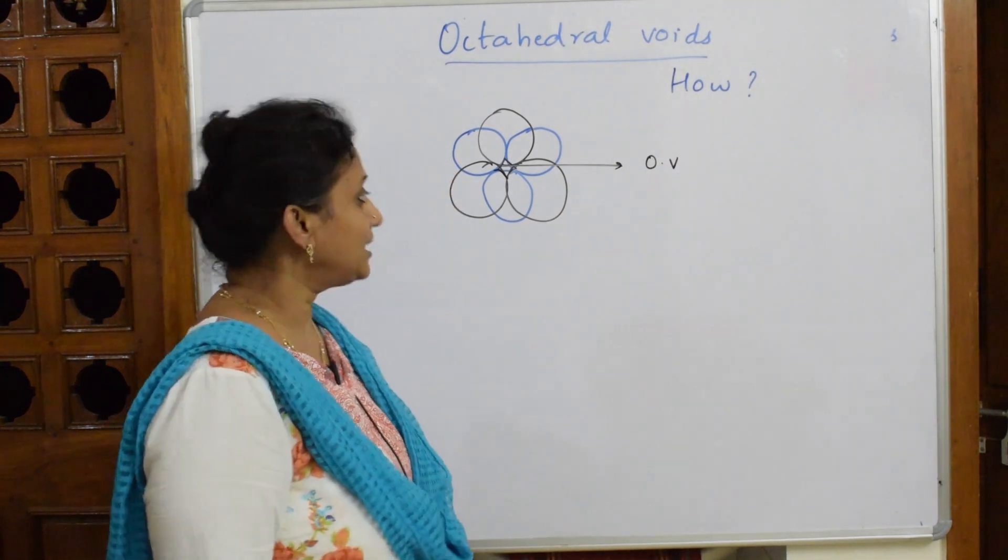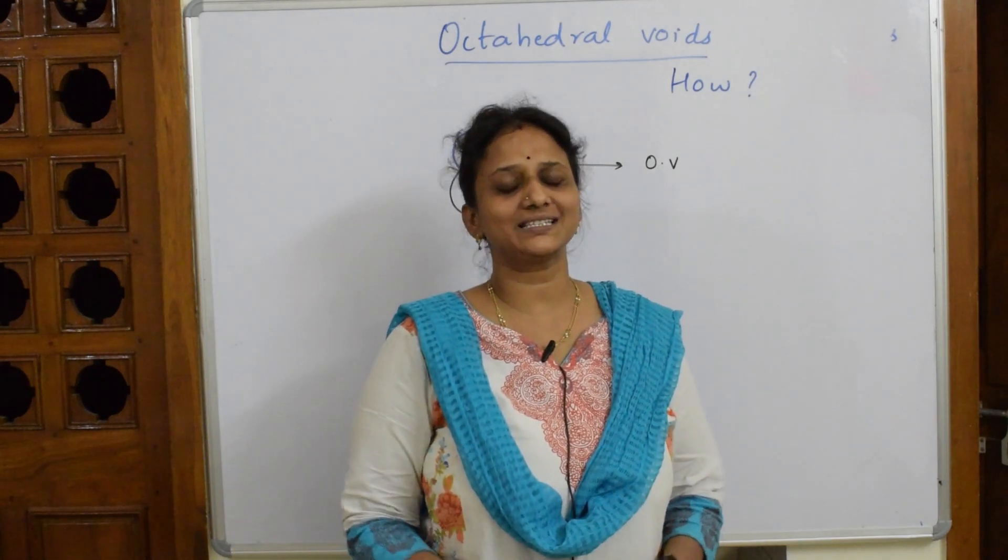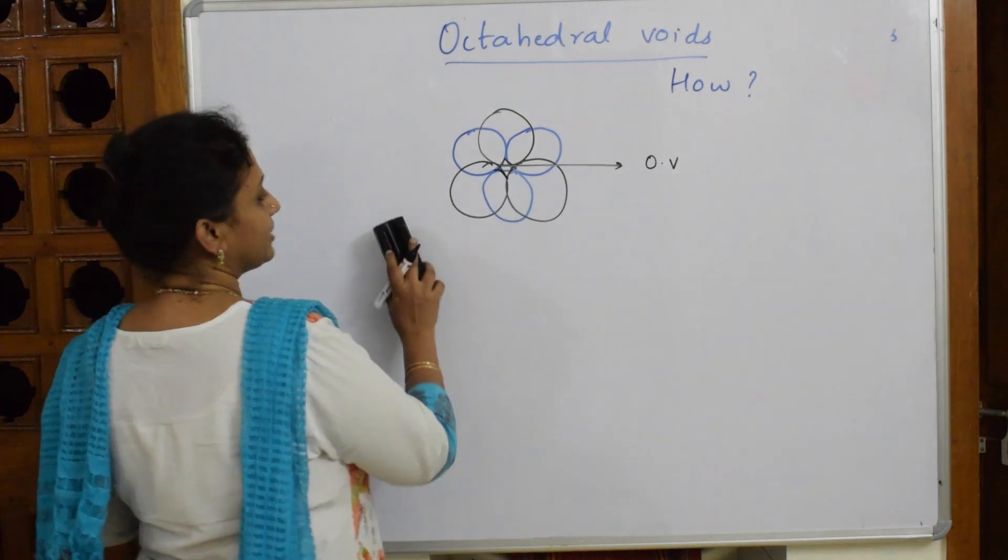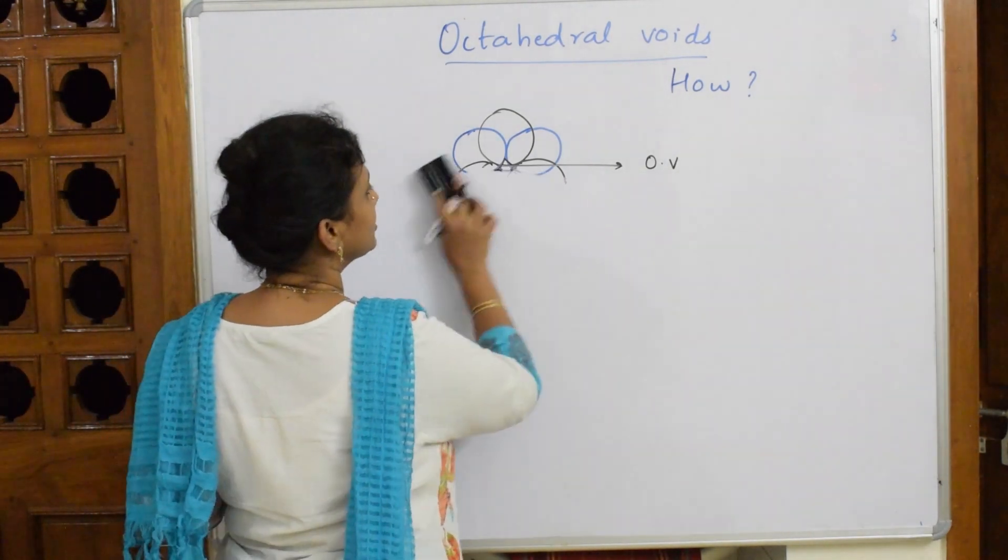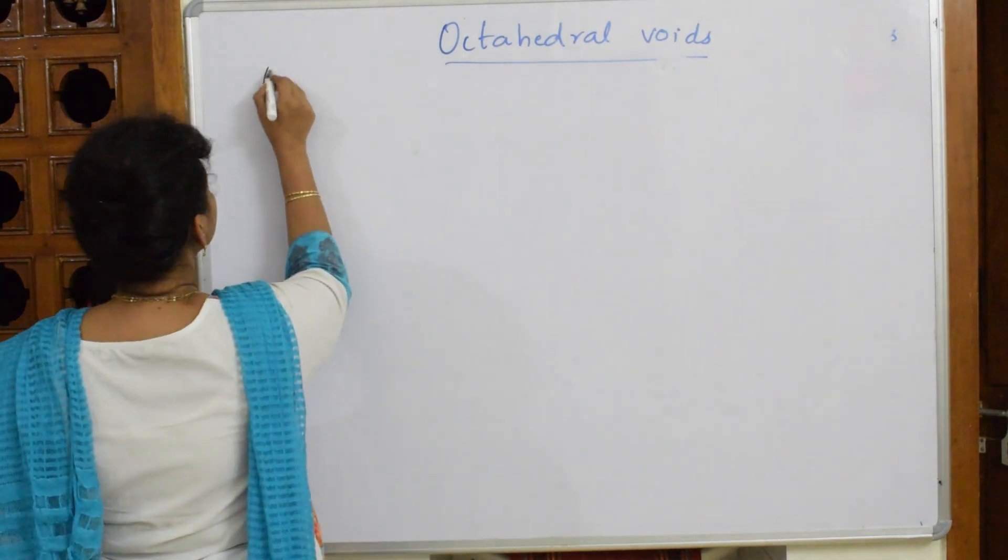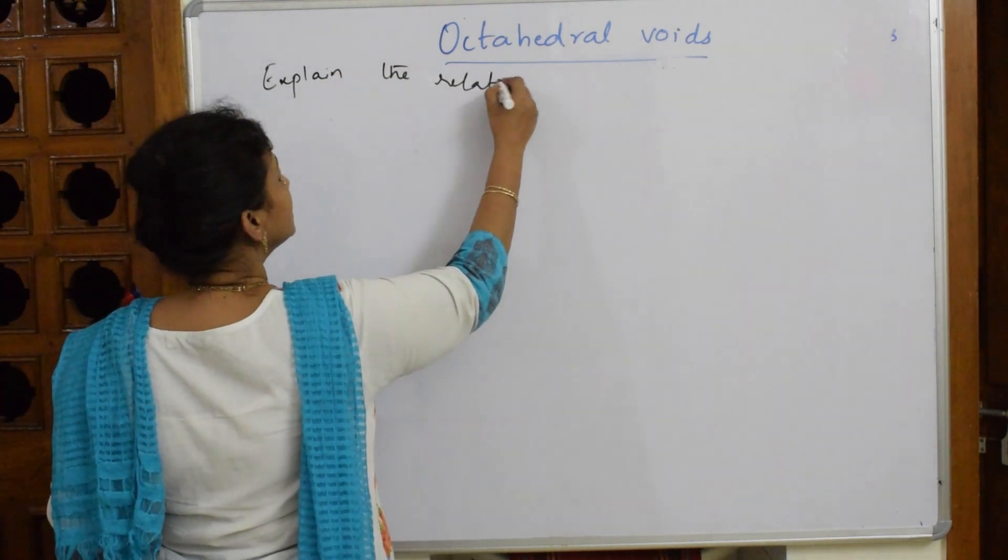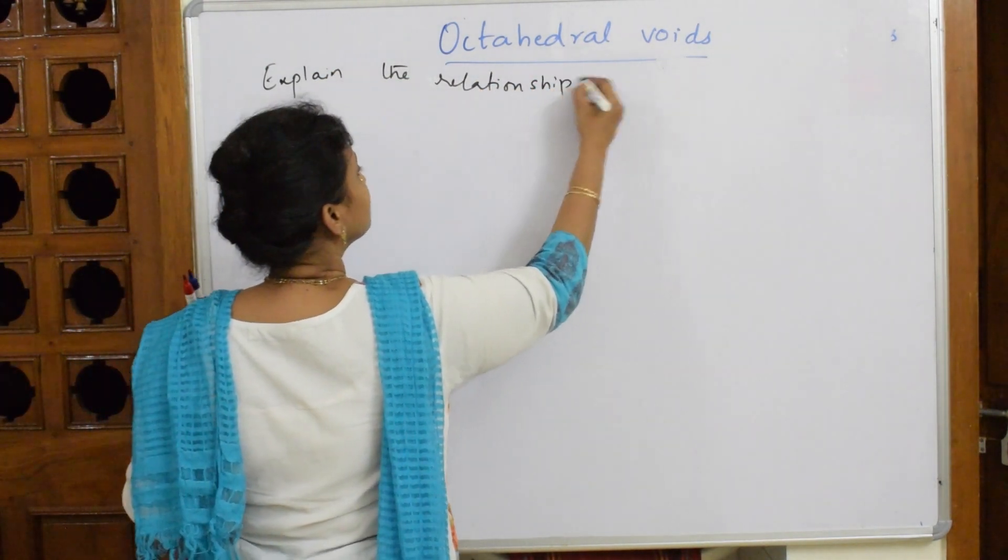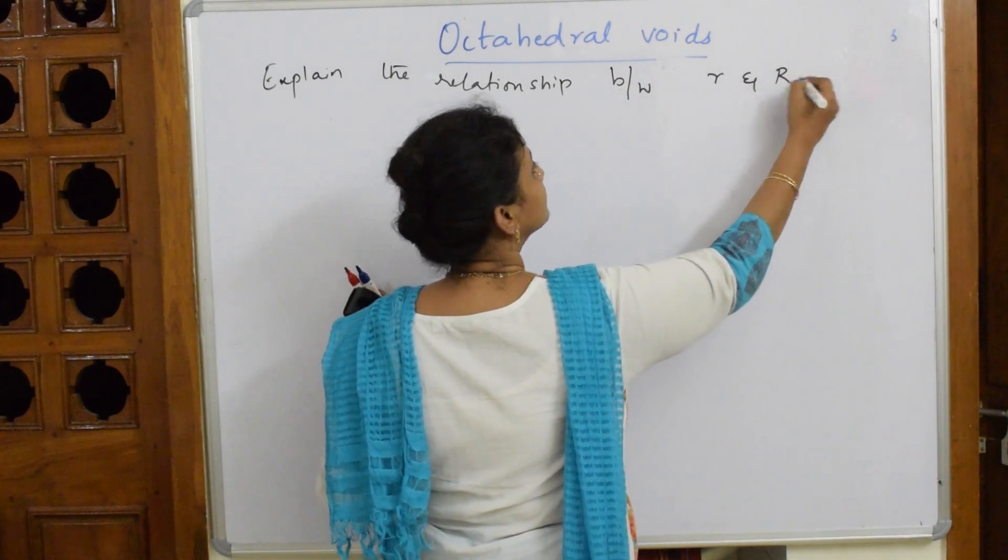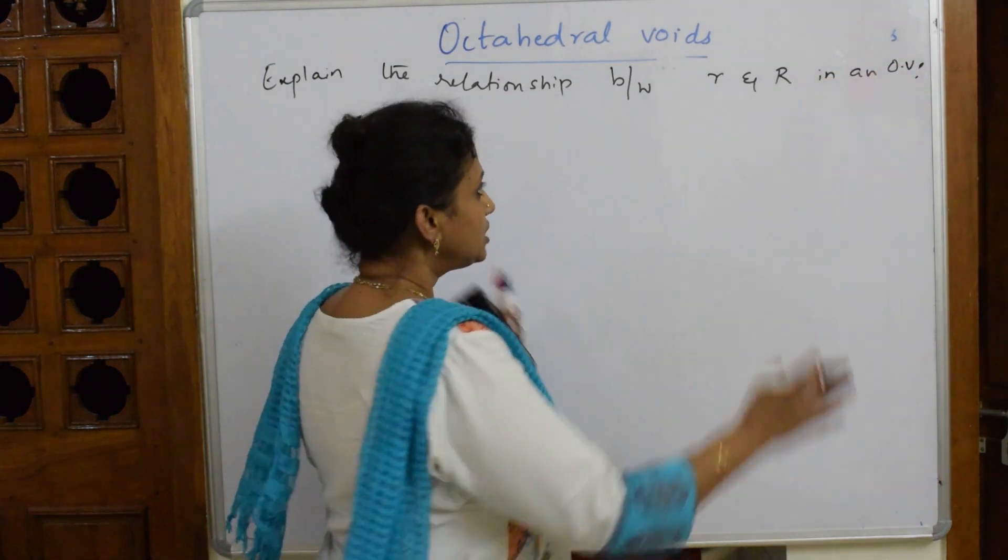There's a small question which appeared in your CBSE exam. They've asked you, if I'm speaking about octahedral void concept, a question was asked: explain the relationship between R and r in an octahedral void. This was the question. How should I start the question?